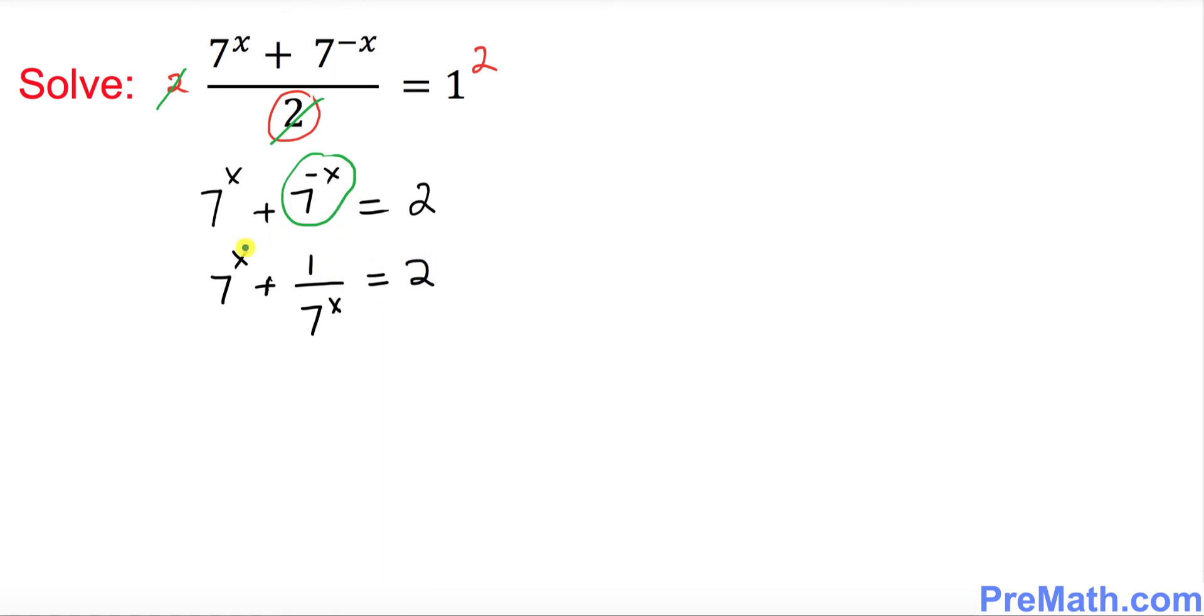Now we're going to go ahead and simplify furthermore. I can let u equal to 7^x to make it more simple. So I'm going to use a substitution method, let u equal to 7^x. That means this becomes simply u plus 1 over u equals to 2.